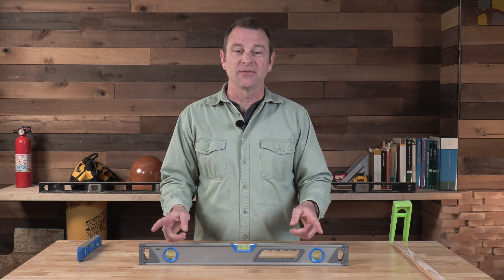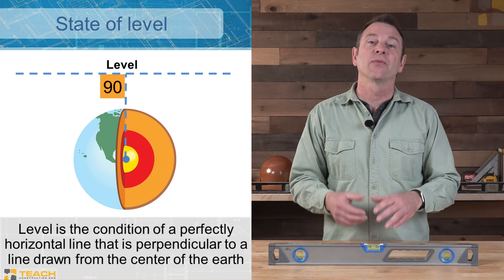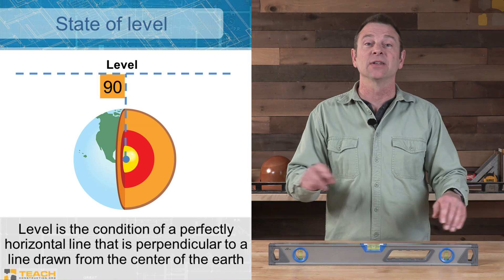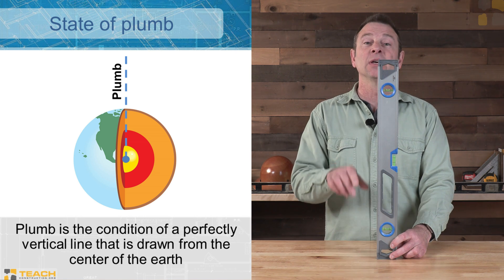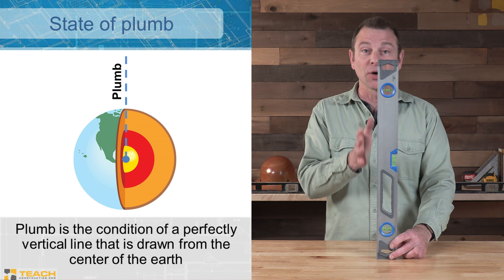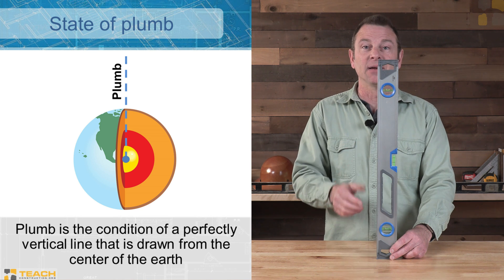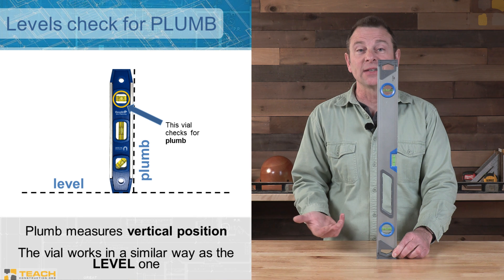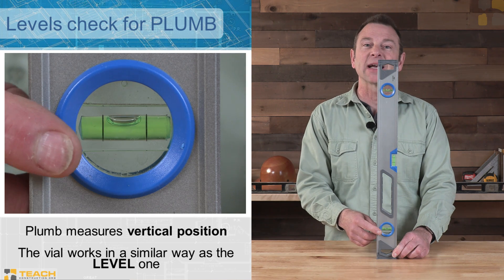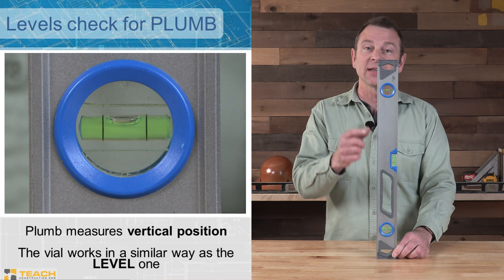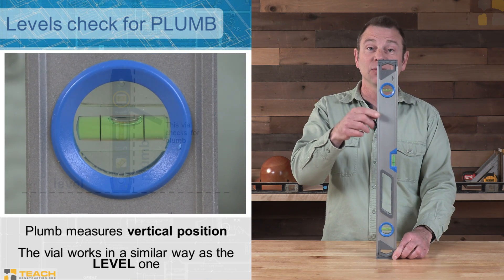There are other vials besides the center one we use for level. Those are used to identify a different condition called plumb. Level means perfectly flat or horizontal relative to the center of the earth; a plumb line would be perfectly vertical. The vials on this level help us measure and identify that perfect plumb line. If we hold the tool against a surface and the bubble centers between the two lines, that surface is plumb. If not, the bubble will stray to one side and we'll need to adjust to get back to that center mark.